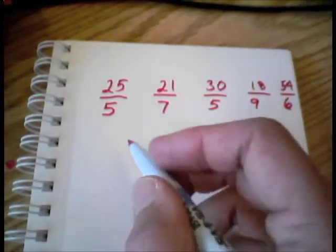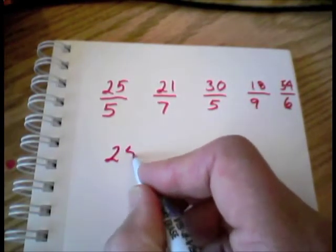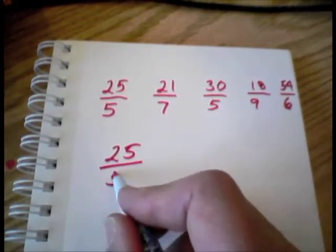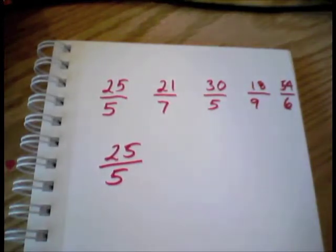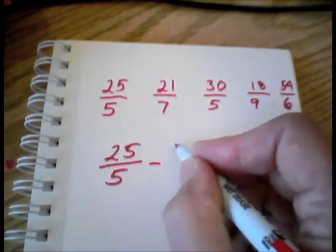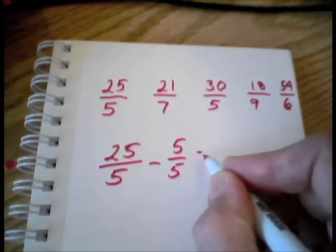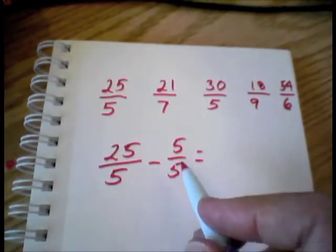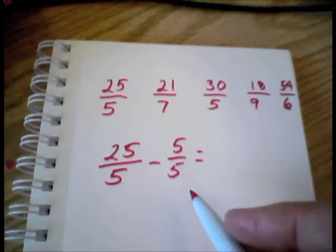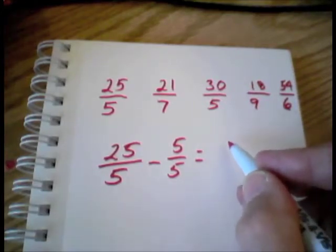How do you take 25 fifths and reduce it to a mixed number? You take advantage of that rule that any time the numerator and denominator are the same, it equals 1. So we just start subtracting out 5 fifths. Jake, 25 fifths take away 5 fifths is how many fifths? 20 fifths. That's right.